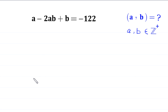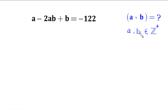Hello everyone, you are welcome to how to solve this very nice Diophantine equation: a minus 2ab plus b is equal to negative 122. Our job is to find all possible values of a and b such that a and b are positive integers. So let's start.